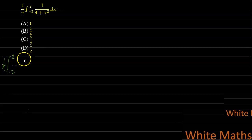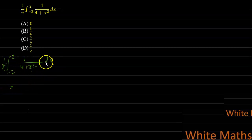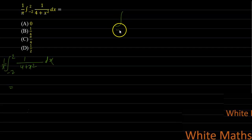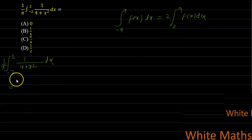The integral is (1/π) with limit from -2 to 2 of 1/(4+x²) dx. To simplify this integral, apply the property: ∫₋ₐᵃ f(x) dx = 2 ∫₀ᵃ f(x) dx, since the integrand is an even function.